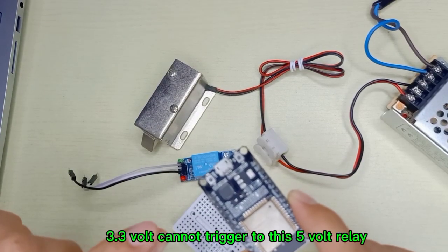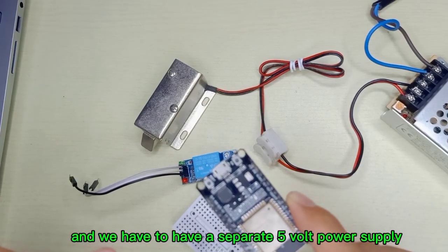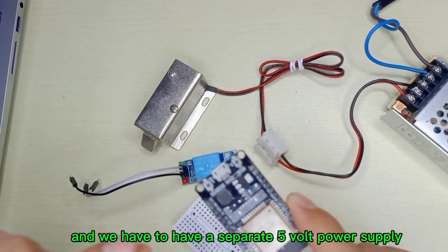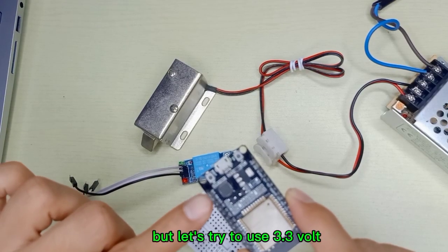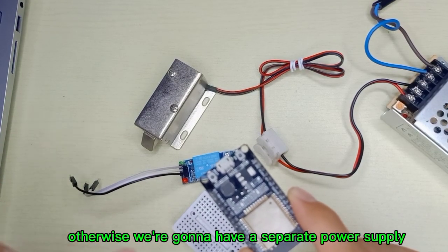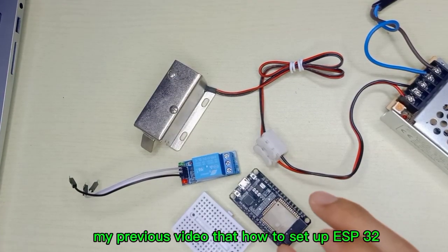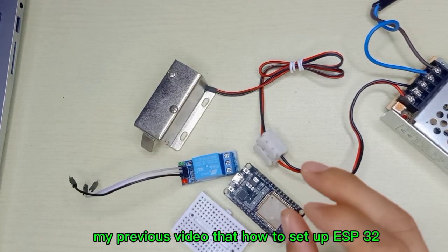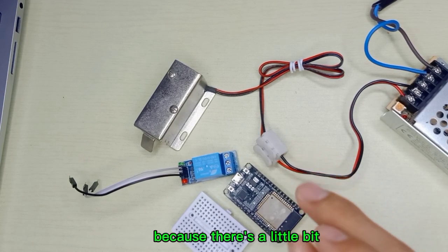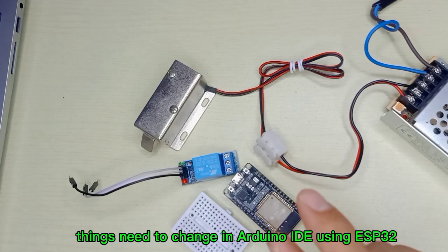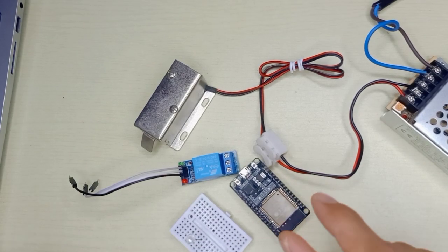If the 3.3 volt cannot trigger this 5 volt relay, we would have to have a separate 5 volt power supply, but let's try to use 3.3 volt. Make sure you watch my previous video on how to set up ESP32 step by step with Arduino IDE because there's a little bit that needs to change in Arduino IDE when using ESP32. Let's get started.